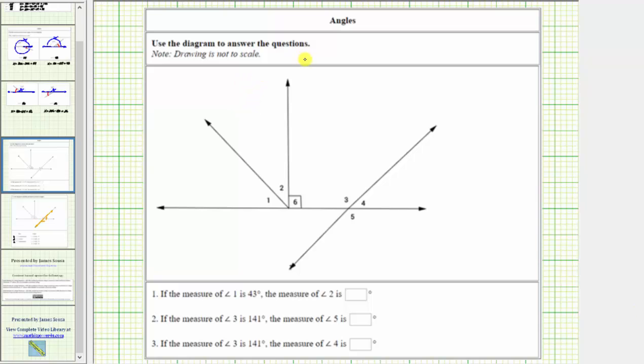We're asked to use the diagram to answer the questions. For number one, the measure of angle 1 is 43 degrees. What is the measure of angle 2?